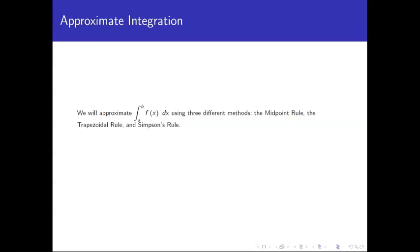Back in Calculus 1 you talked about getting approximations for integrals using left-hand or right-hand endpoints of sub-intervals as the heights of your rectangles. What we're going to talk about here are three other methods: the midpoint rule, the trapezoidal rule, and Simpson's rule. The midpoint rule is very similar to the left/right endpoint approach, while the other two use different shapes whose areas we know.